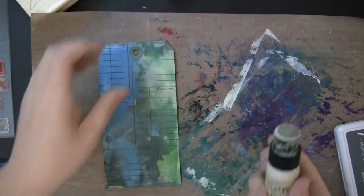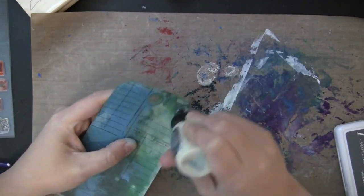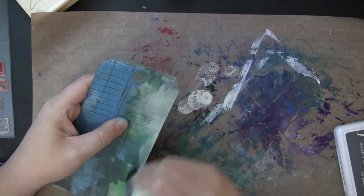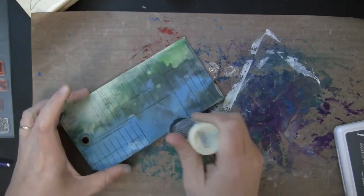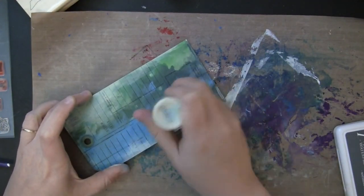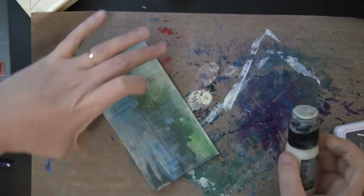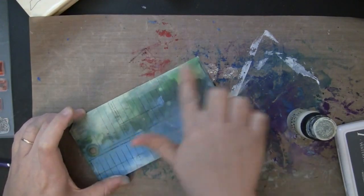Next, I will take Antique Linen Distress Paint, and I'm just swiping some of this onto the side of the tag, and then I'll blend it with my finger a little bit. This gives even more color variation and areas of light to the background.